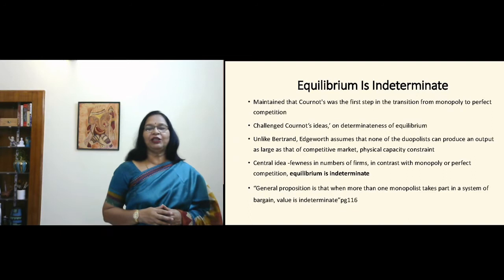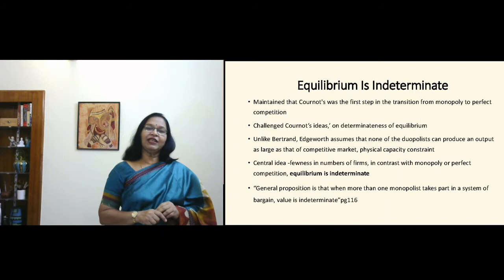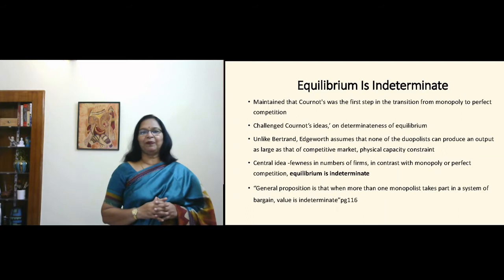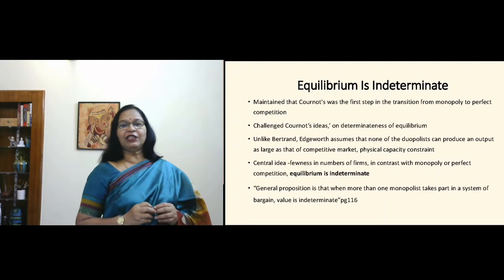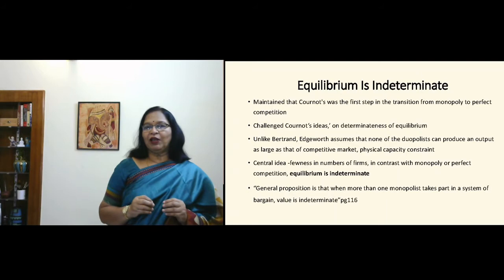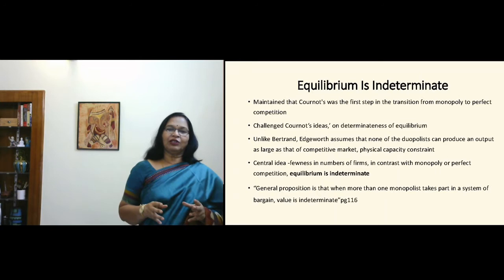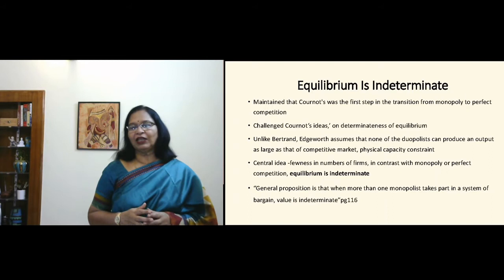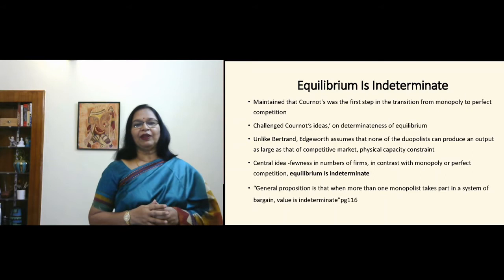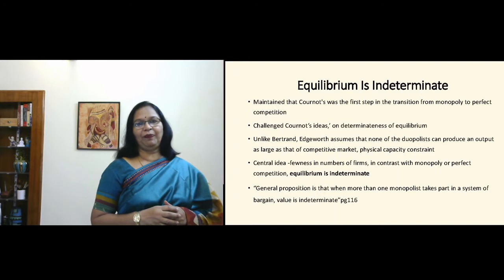According to Edgeworth, equilibrium is indeterminate — he maintained that it is not possible for firms to reach an equilibrium state. He started off with Cournot and maintained that Cournot was the first step in the transition from monopoly to the perfect market. Between monopoly and perfect market there were different forms of market situation, and when there are few firms, nothing had yet been developed. So Cournot's step was certainly the first step toward that understanding.